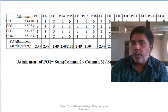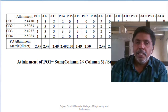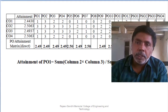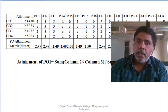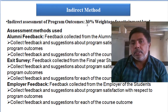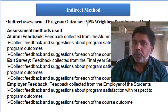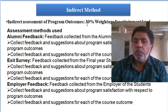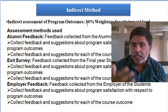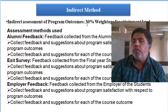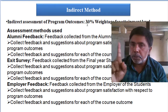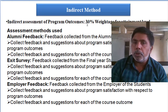Even with a low benchmark, we may not fully attain all POs through direct method alone — so we cannot draw final conclusions about PO attainment from direct method only. We then move to indirect method. Indirect method consists of 10% alumni feedback, 10% exit survey, and 10% employer feedback. Alumni feedback and exit survey are collected and used to assess course outcome and program outcome attainment.